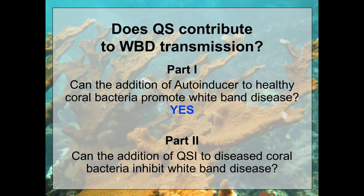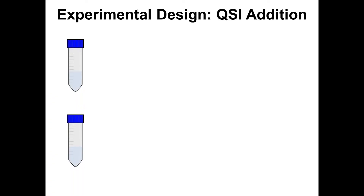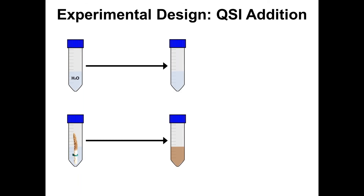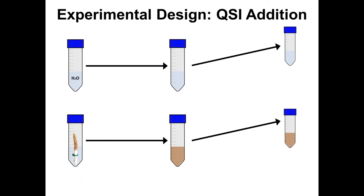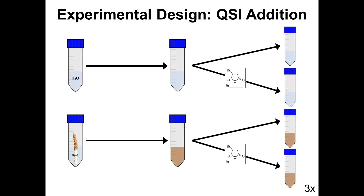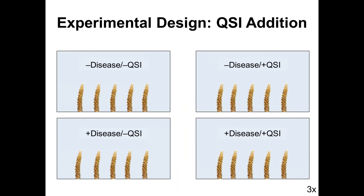The second part of my research question is: can the addition of QSI to disease coral bacteria inhibit disease? The experimental design was similar. I collected diseased corals from Bocas del Toro, Panama in February 2015, using a counterpart of seawater since I was more interested in the disease population. After homogenizing to get our disease slurry, treatments were split into four: seawater alone, seawater plus QSI, disease alone, and disease plus QSI. These four treatments were dosed onto healthy corals in aquaria, and I monitored the corals for disease signs over about a week.